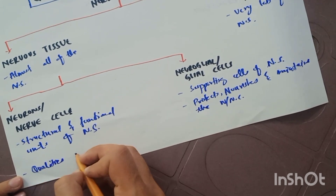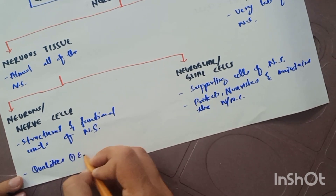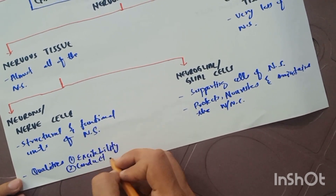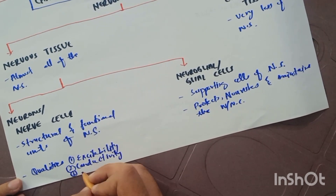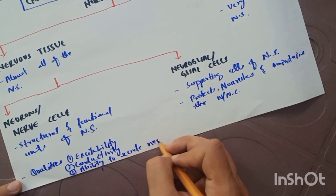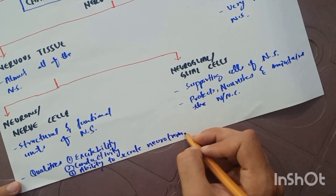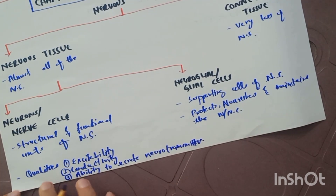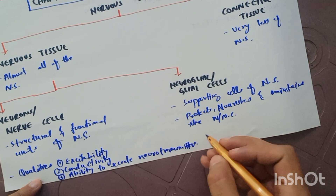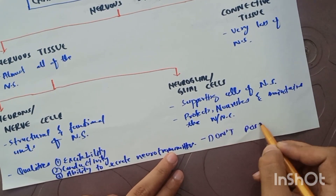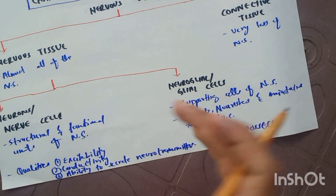The neurons or nerve cells have three main qualities: number one is excitability, number two is conductivity, and number three is the ability to secrete neurotransmitters. The neuro glial or glial cells do not possess these three qualities — they only support the neurons.